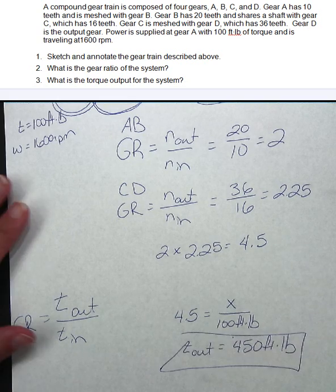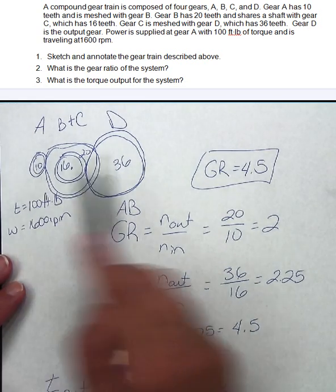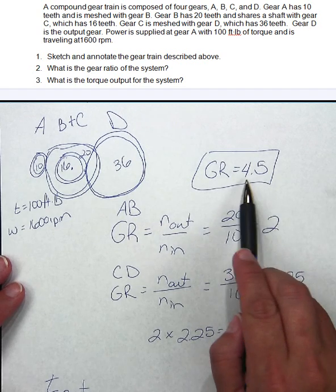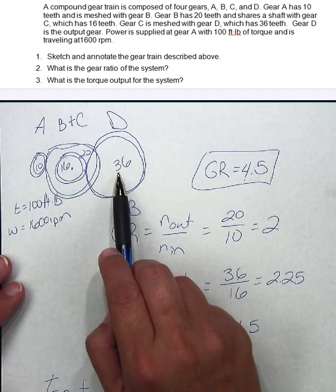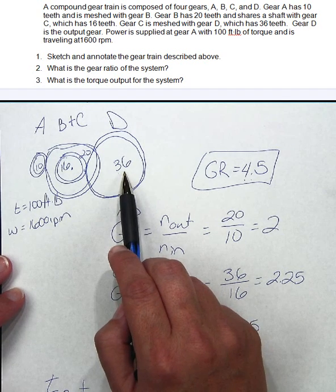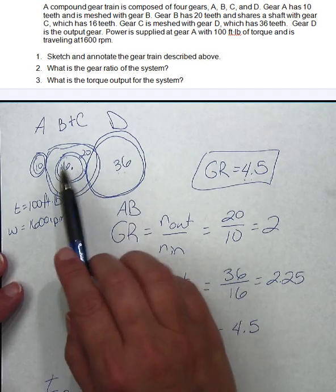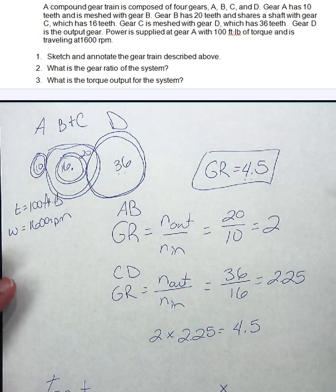Alright, so if you'll notice we started with a smaller gear and we ended up with a larger gear ratio of 4.5. We went to a 36 gear. Alright, the larger the radius, the larger the torque should be. Anyways, and we're adding this as a compound, which is also going to give us a better gear ratio.